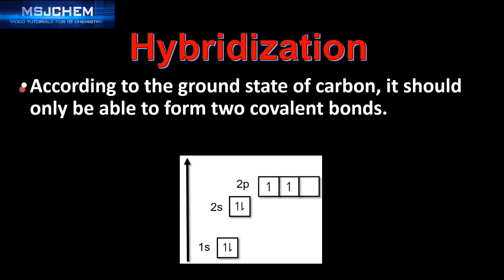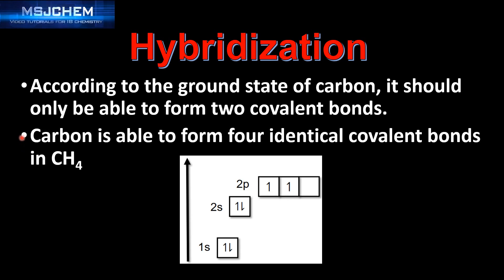According to the ground state of carbon, it should only be able to form two covalent bonds. Here we have the electron in box diagram for the ground state of carbon, and as you can see, the ground state of carbon only has two half-filled 2P orbitals, so it should only be able to form two covalent bonds. However, carbon is able to form four identical covalent bonds in methane, CH4.